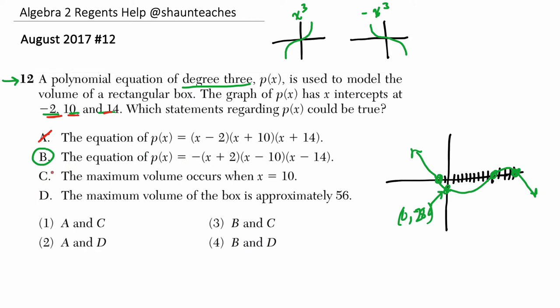I'm going to cross out C. The maximum value occurs when x is 10. Well, that's a minimum, right? Those are roots. Those are zeros. Those are intercepts. So these three points, negative 2, 10, and 14, are the zeros of the function. Those are the minimum volume values.